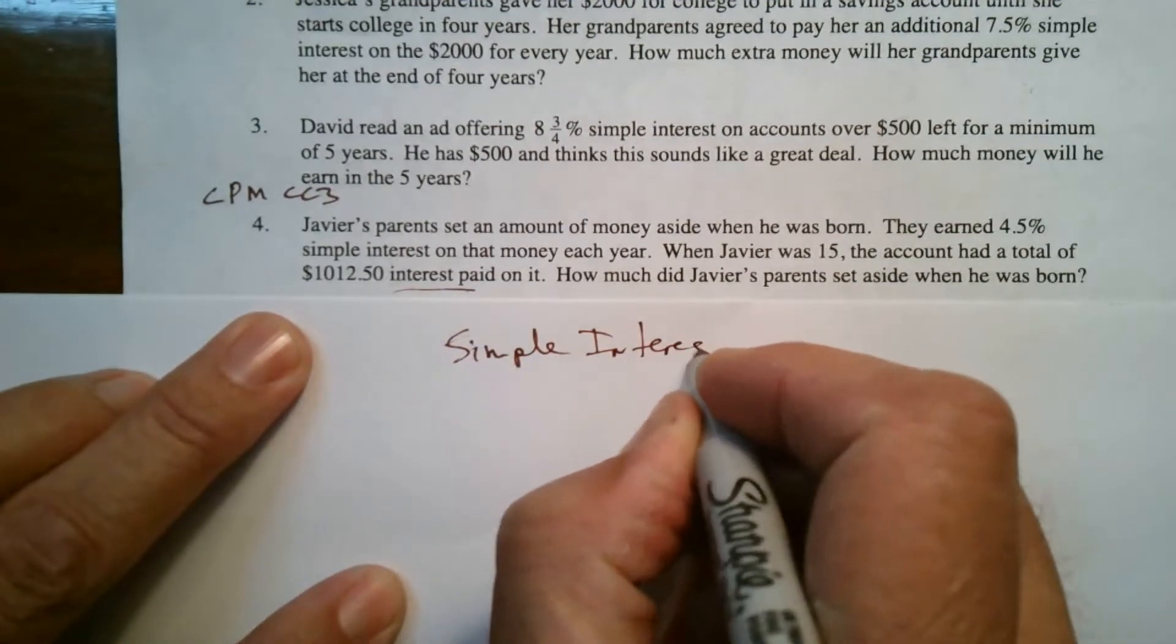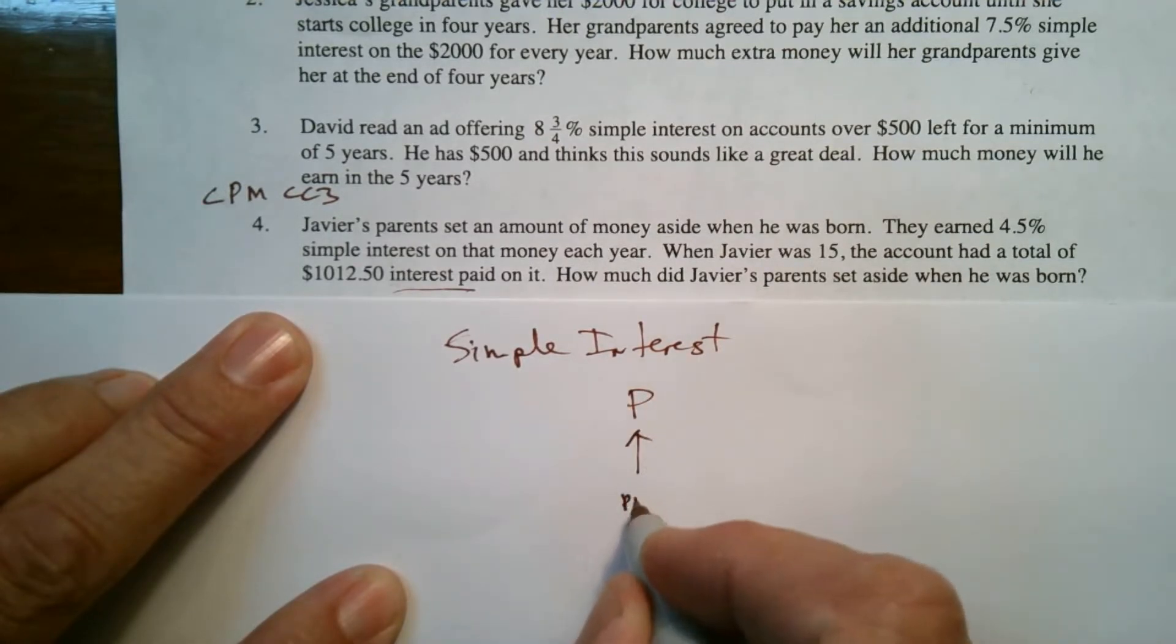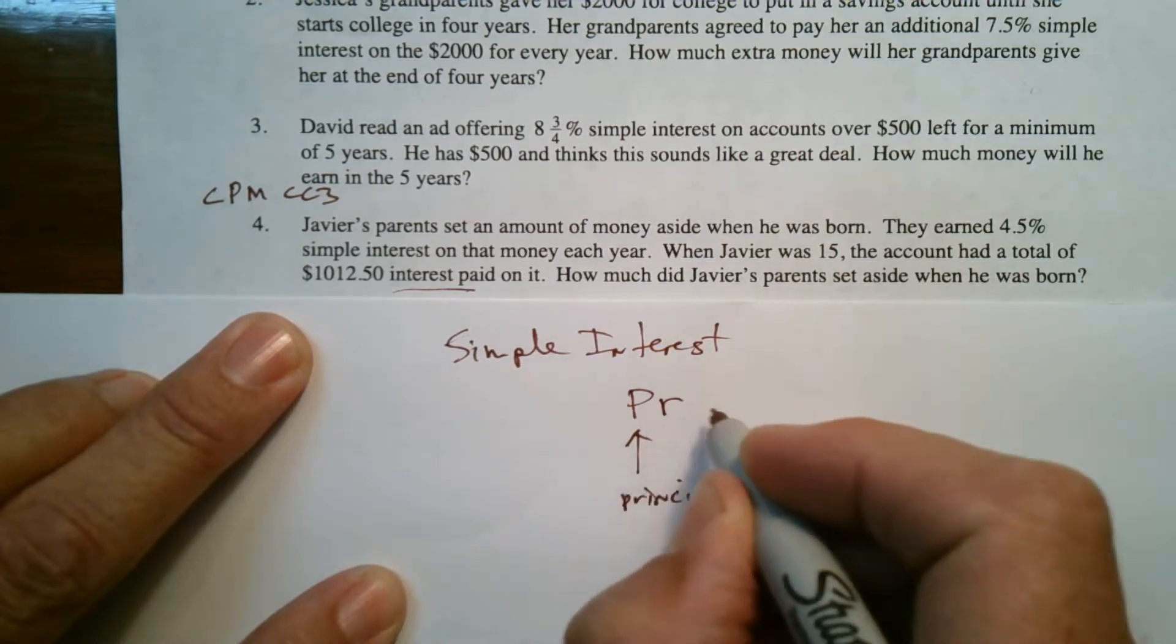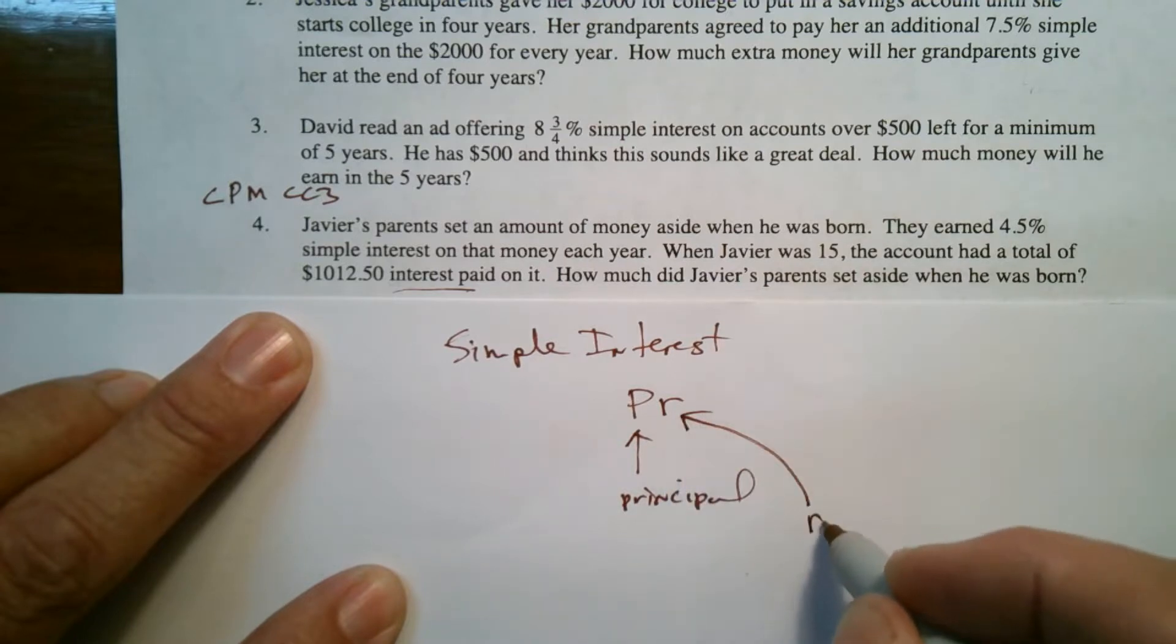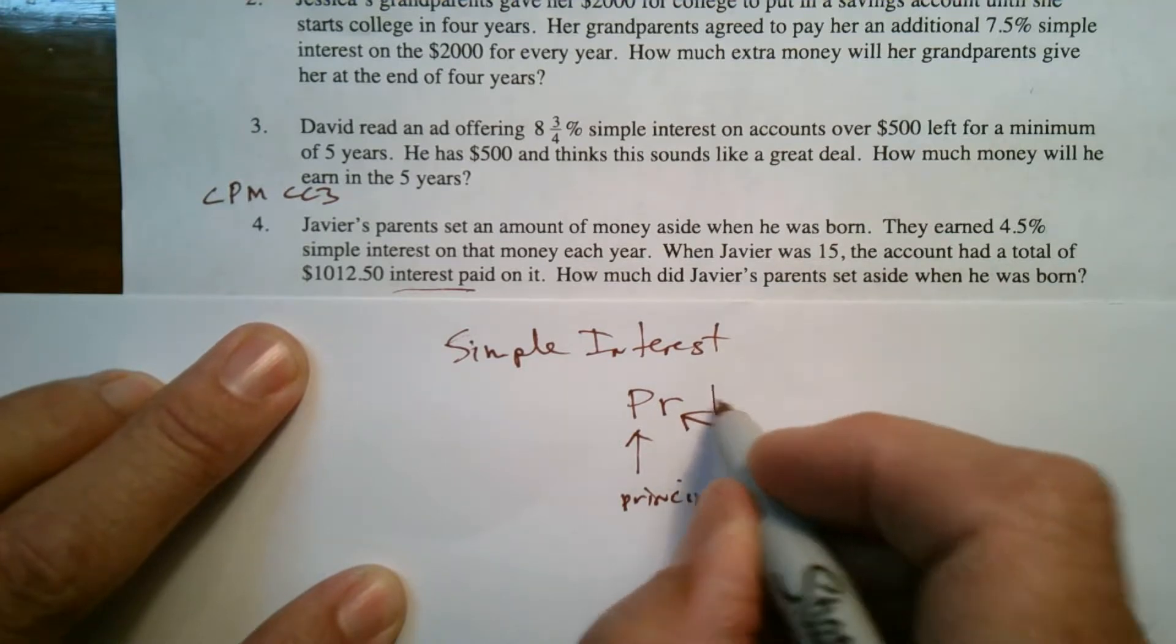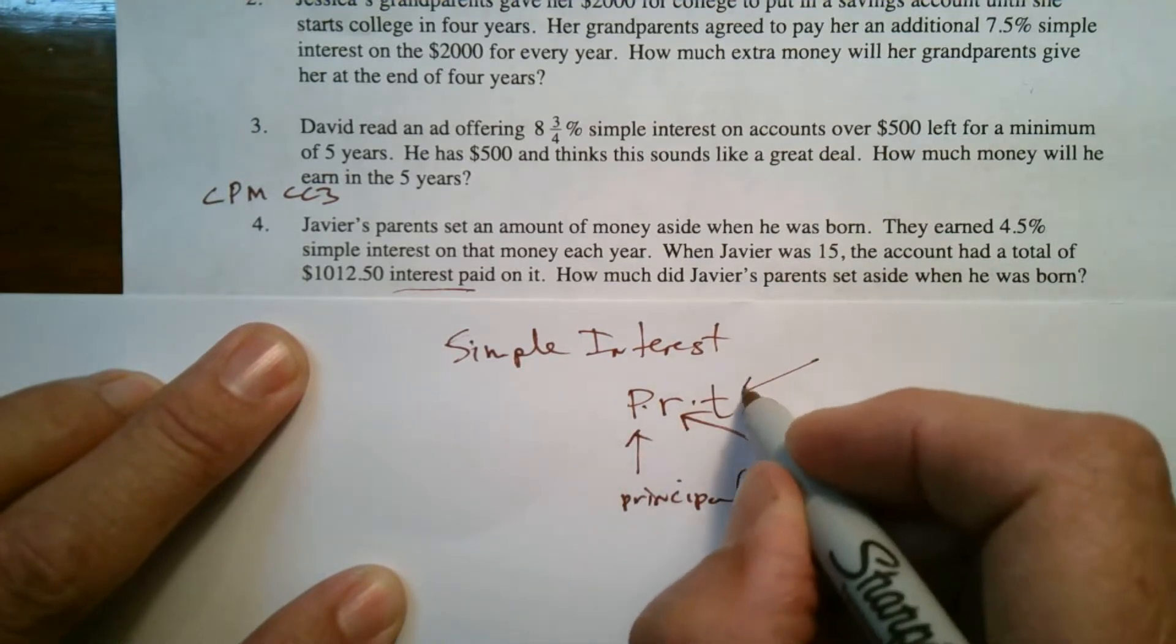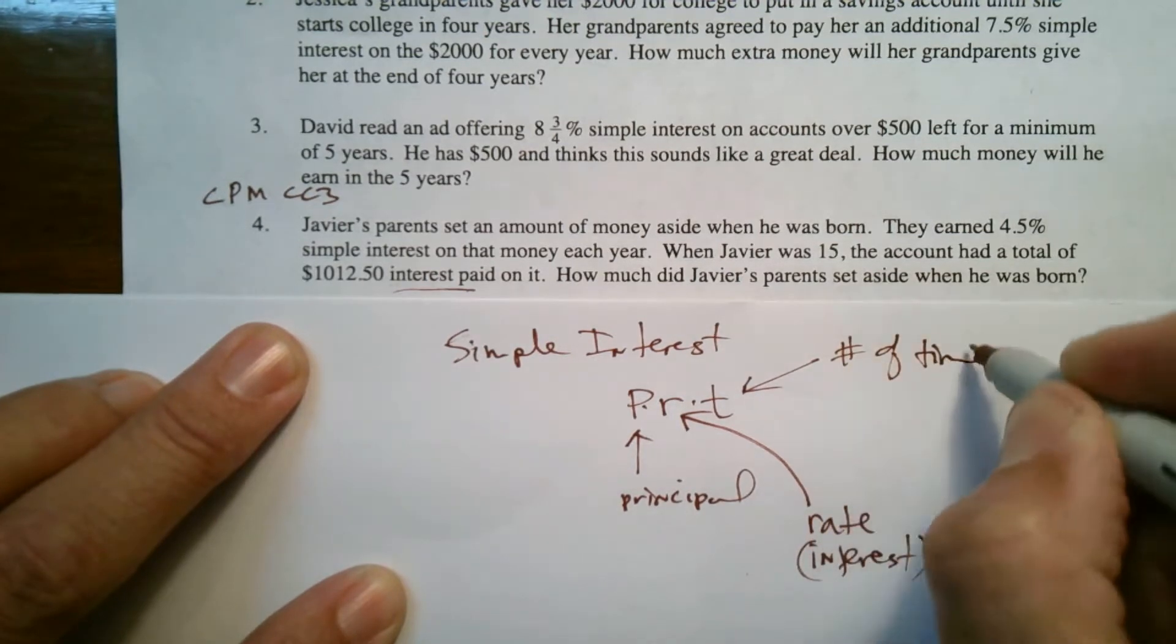So, simple interest. To find simple interest, you take your principal, that's your P, the amount of money you start with, and you multiply that by the R, which is your rate, your interest rate. That's the percentage. And then you also multiply by T, and T is the number of times applied.